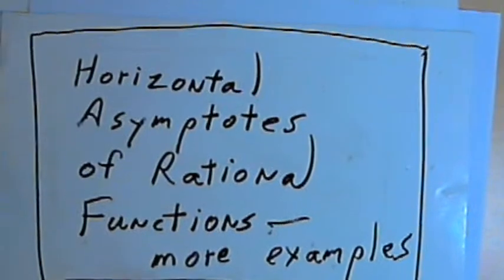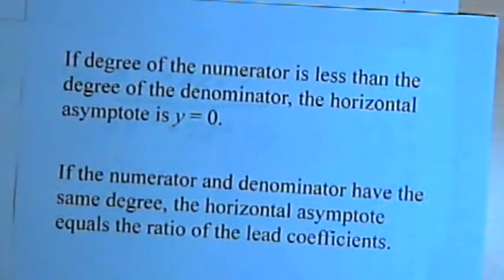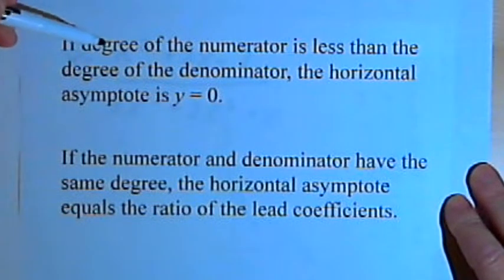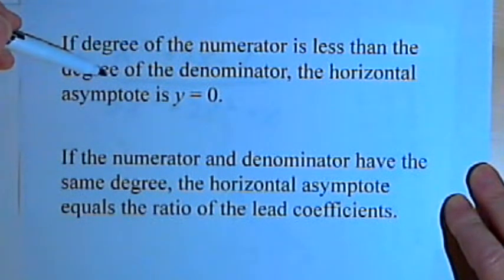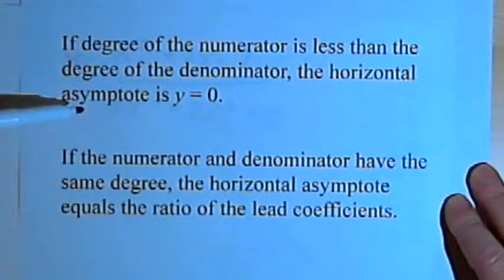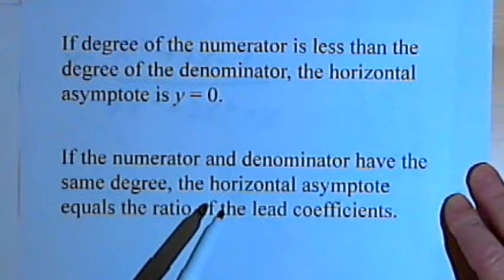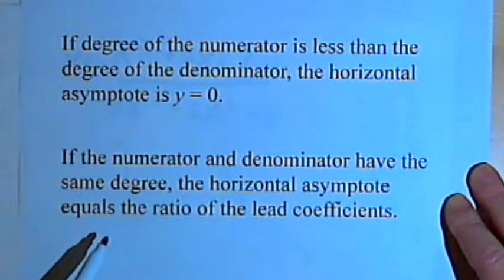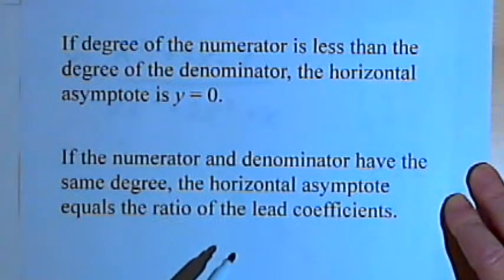Let's take a quick look at the two kinds of situations that can create horizontal asymptotes. If the degree of the numerator is less than the degree of the denominator, the horizontal asymptote is going to be y equals zero. If the numerator and the denominator have the same degree, the horizontal asymptote will equal the ratio of the lead coefficients.